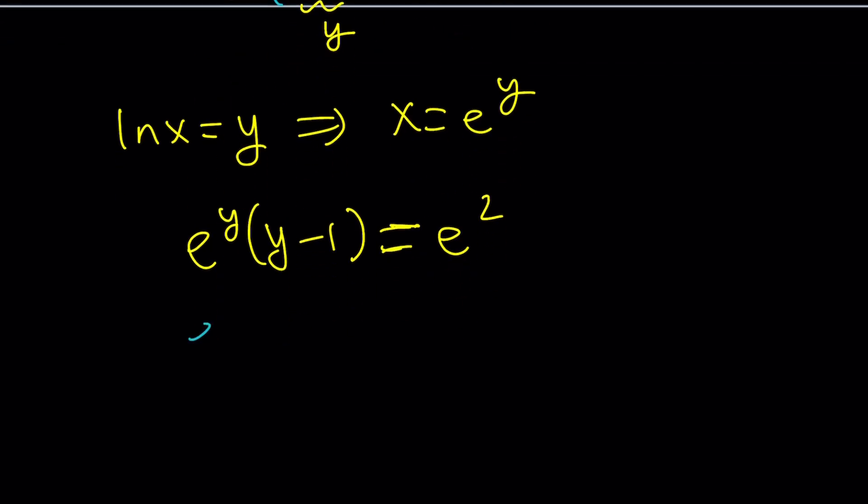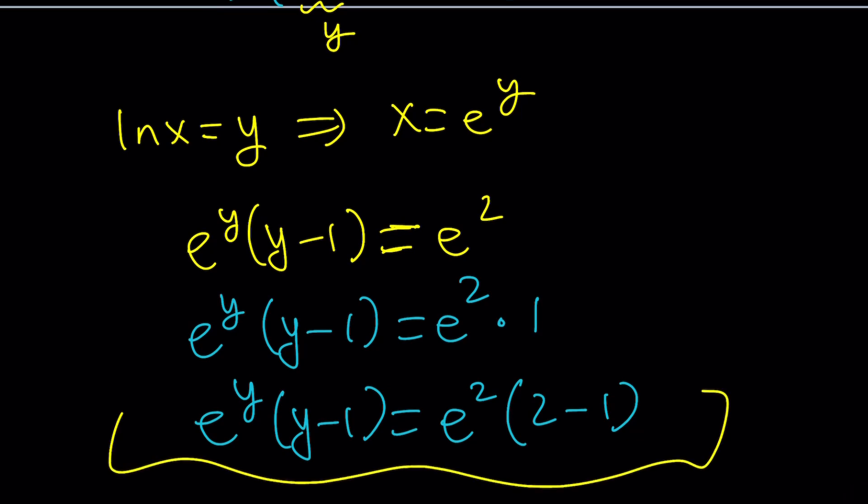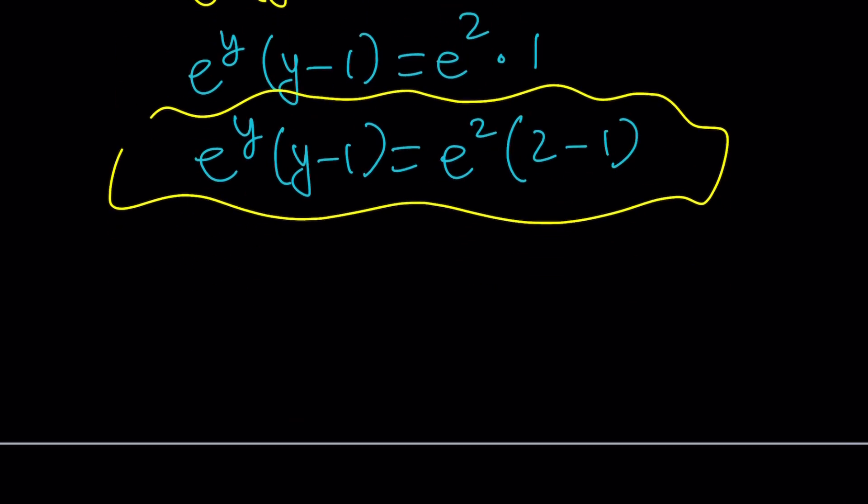Notice that e squared can be written as e squared times 1. And 1 can be written as 2 minus 1. So that when I set these equal to each other, hopefully you get to see the one-to-one correspondence. Do you see what I see? So from here, y is equal to 2. And hopefully, you know why.